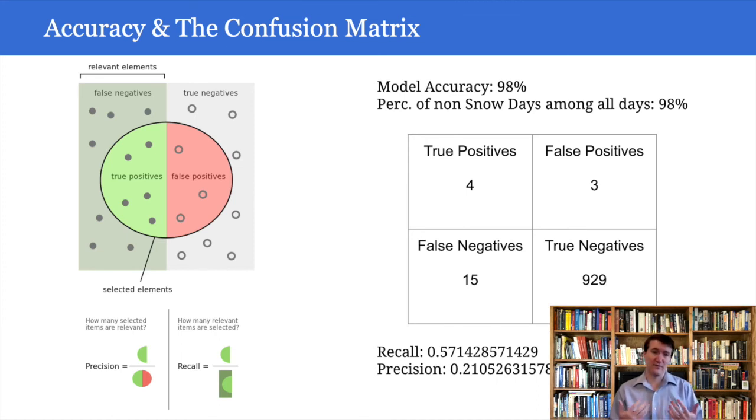In this case, in our example, that would be like 20% of the time when I say school is going to be canceled, it is canceled, which is pretty poor performance. And we're only catching, not catching a very high proportion of the true positives or the true cancellation rates there, and recall tells us that.